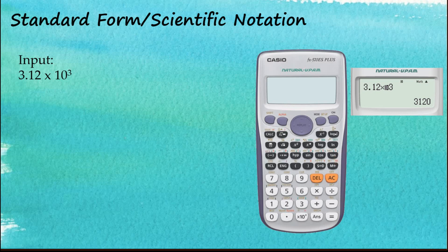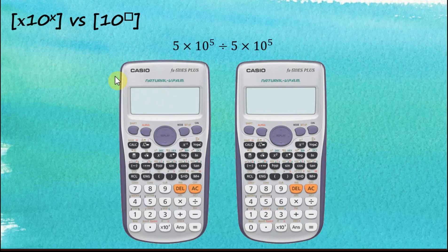That's how we insert numbers in standard form or scientific notation in the Casio fx-570 ES Plus calculator. Now, the '×10^x' button versus the '10^x' button: we mentioned that we can insert a scientific notation using either button, but the correct one to use should be this '×10^x' button. Let's use an example to see the difference between these two.